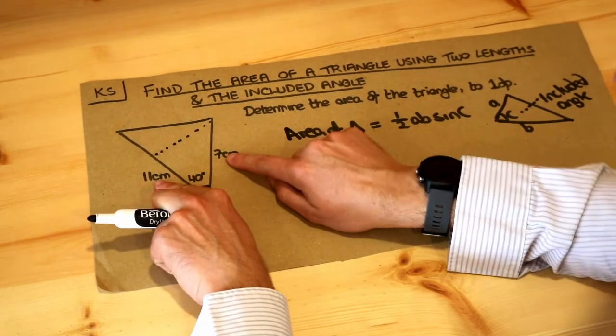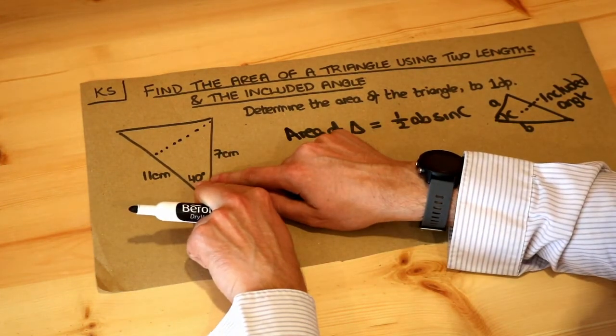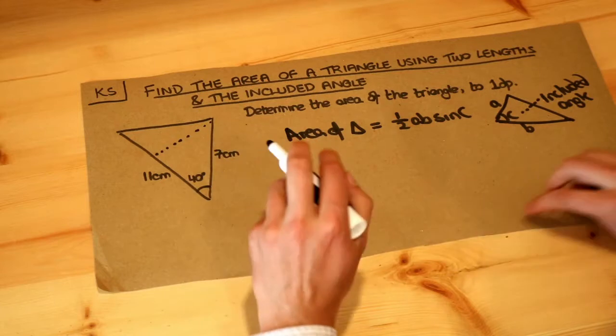So in this particular case we've got two sides of interest and we've got the included angle, the angle between those two sides.